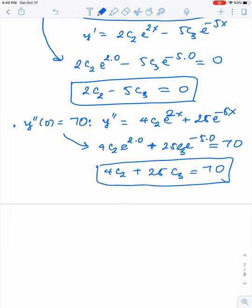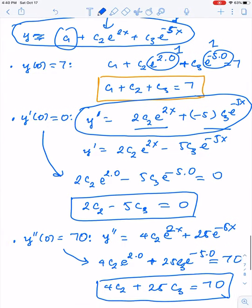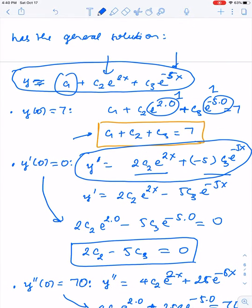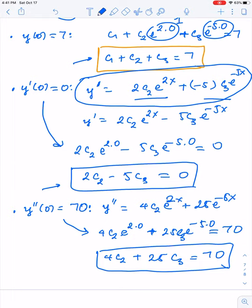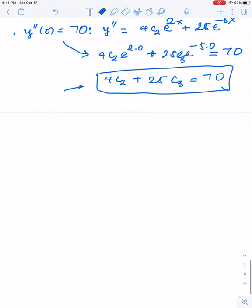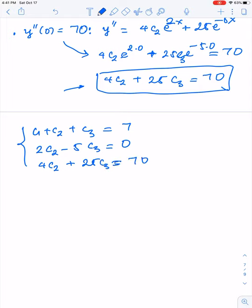Solving these three equations for c1, c2, and c3, we combine them together into a system: c1 + c2 + c3 = 7, 2c2 - 5c3 = 0, and 4c2 + 25c3 = 70. The three equations above give us this linear system.